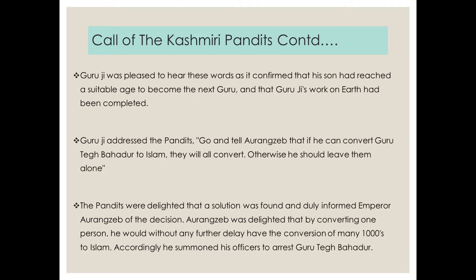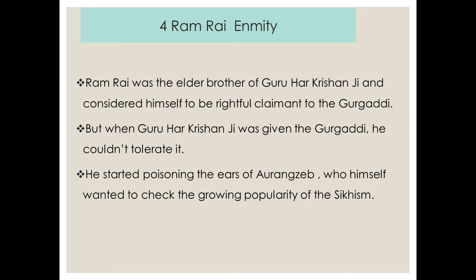Guru Ji was pleased because he now knew the solution was right within him and his work on the earth had been completed. Guru Ji at once addressed the Pandit and said: 'Go and tell Aurangzeb that if you can convert Guru Tegh Bahadur Ji to Islam, then all the Kashmiri Pandits will be converted. But if you are unable to convert Guru Tegh Bahadur Ji, then you cannot convert the Kashmiri Pandits.' The Pandits were very happy that a solution was found and duly informed Emperor Aurangzeb. Aurangzeb was delighted, knowing that if he could convert Guru Tegh Bahadur Ji, he would be able to convert thousands of Hindus to Islam. He summoned his officers to arrest Guru Tegh Bahadur Ji and bring him to Delhi.